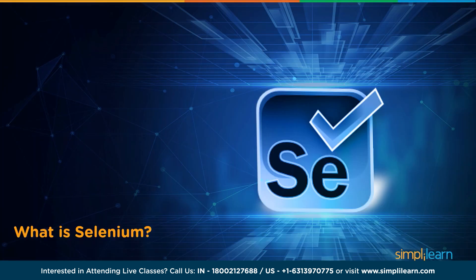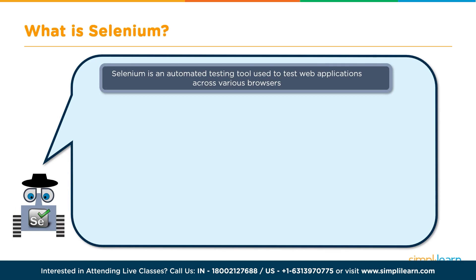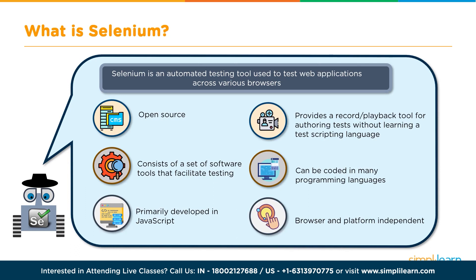Selenium enables testing of web applications on all kinds of browsers — Internet Explorer, Chrome, Firefox, Safari, Edge, Opera, and even headless browsers. It is open source, platform-independent, and free — the biggest reason people prefer it over chargeable tools like QTP and RFT. Selenium is a set of tools and libraries to facilitate web application automation. Scripts can run on any platform because it is primarily developed in JavaScript.